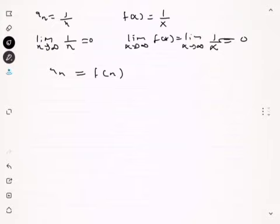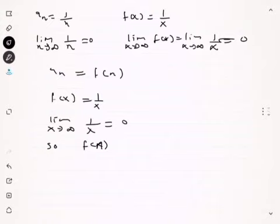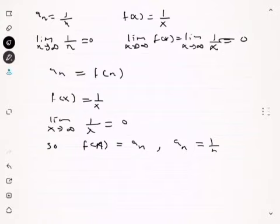There is a theorem that says: if you can show that a function has a limit, and that function equals the sequence for x equals n, then the sequence will also converge to that same number. So since f of x equals 1 over x has limit 0 as x approaches infinity, and f of n equals A sub n equals 1 over n, the limit as n approaches infinity of 1 over n is also 0.